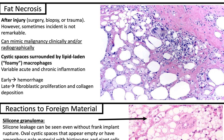Microscopically, we'll see cystic spaces surrounded by lipid-laden macrophages that are gobbling up these dead fat cells. Depending on when we sample it, it can have acute and chronic inflammation. In the early stage you'll have hemorrhage, and in the late stage there's a repair process where you'll have fibroblastic proliferation and collagen deposition.